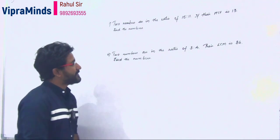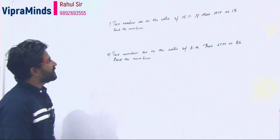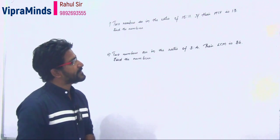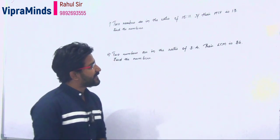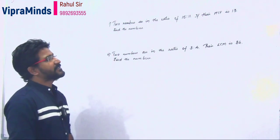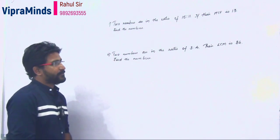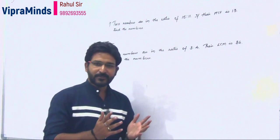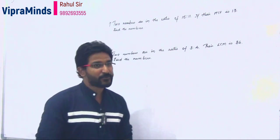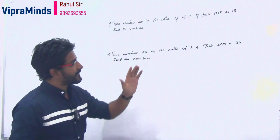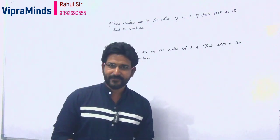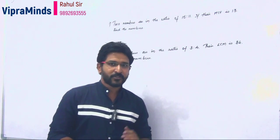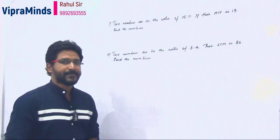The first question is: two numbers are in the ratio of 15 is to 11. If their HCF is 13, find the numbers. So here we have two numbers in the ratio 15 to 11, and the HCF is 13. We need to find out the numbers.